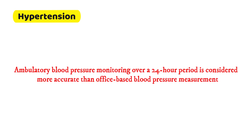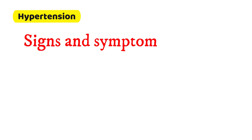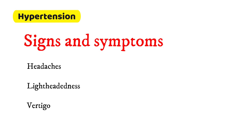Ambulatory blood pressure monitoring over a 24-hour period is considered more accurate than office-based blood pressure measurement. Regarding signs and symptoms, some people with high blood pressure may present with headaches, especially at the back of the head and in the morning, lightheadedness, vertigo, and sometimes tinnitus.